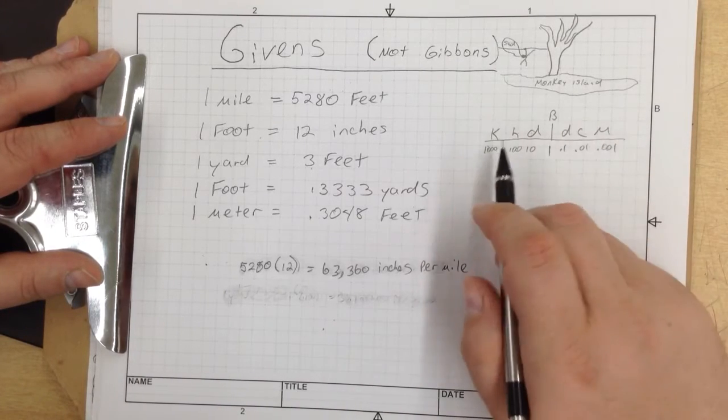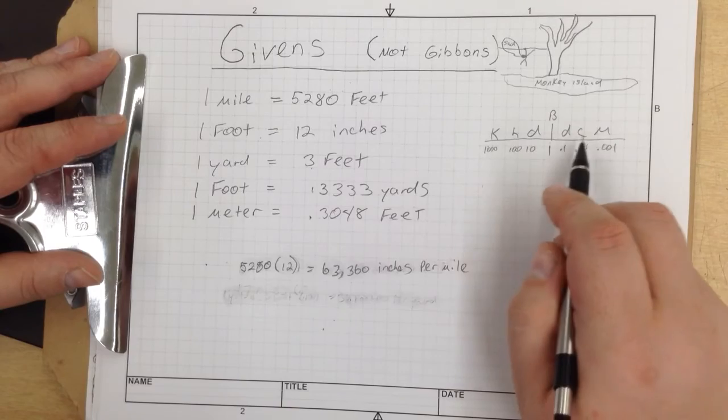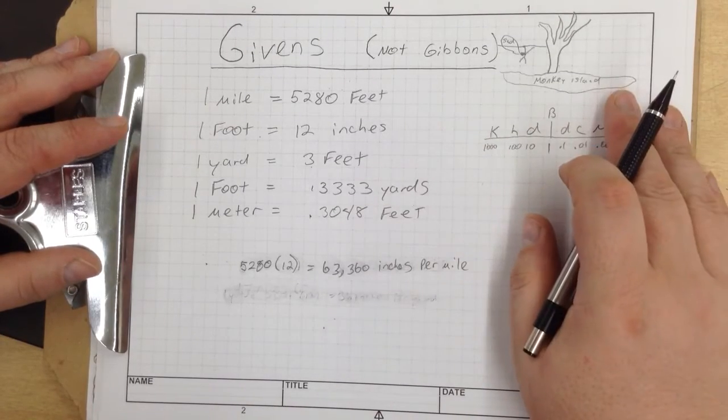With this and our metric equivalency chart, King Henry Died By Drinking Chocolate Milk (kilo, hecto, deka, base, deci, centi, milli), we can pretty much figure out anything we want.